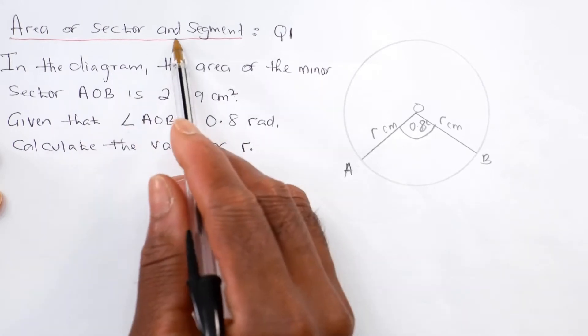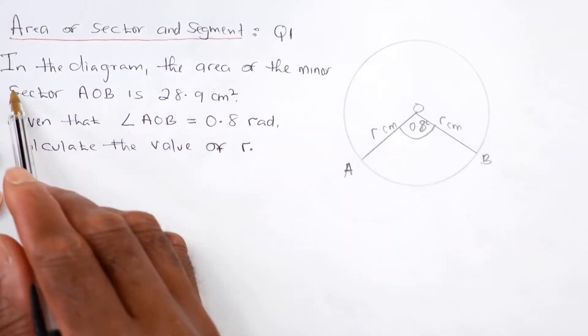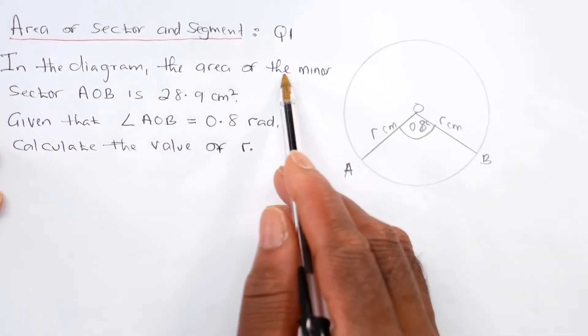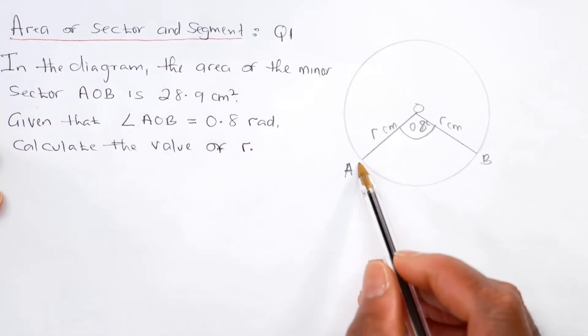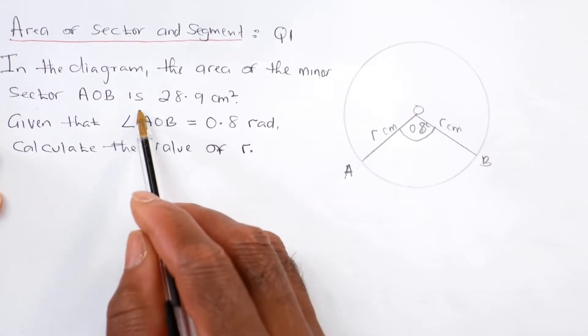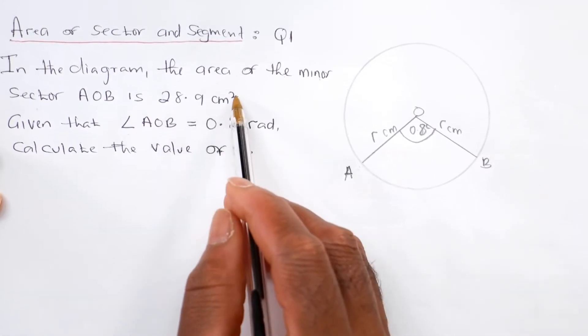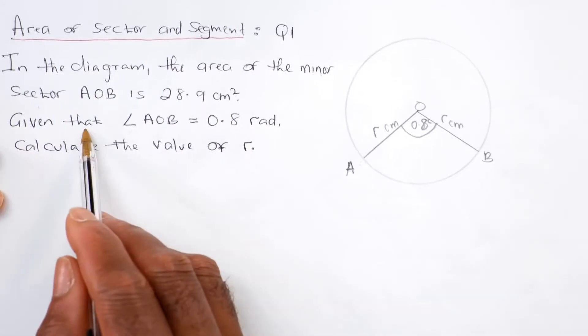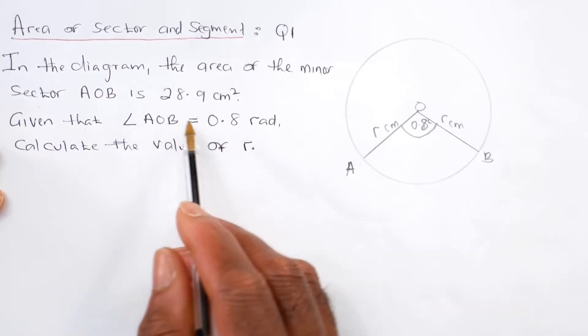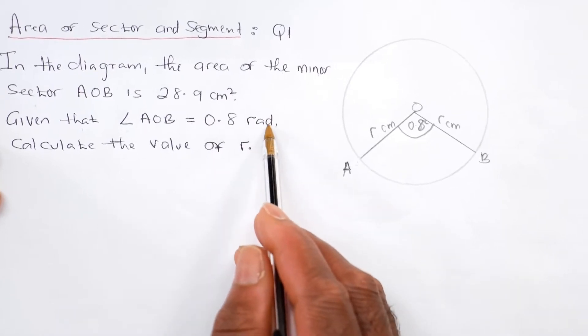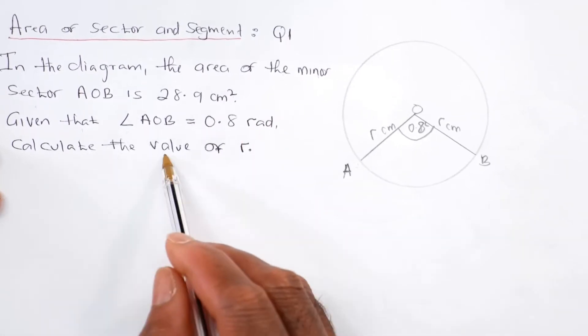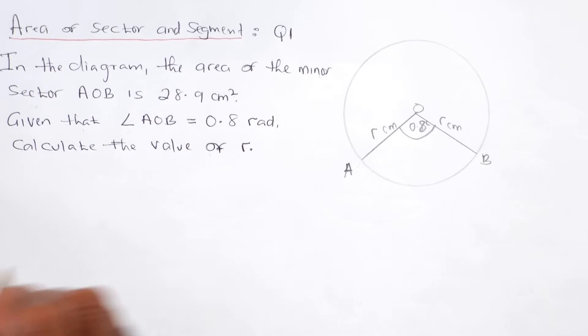Area of sector and segment, question one. In the diagram, the area of the minor sector AOB is 28.9 cm squared. Given that angle AOB equals 0.8 radians, calculate the value of r.